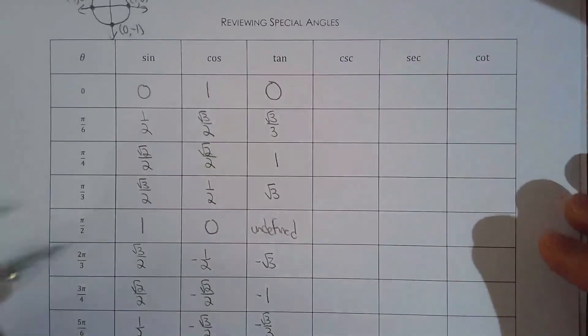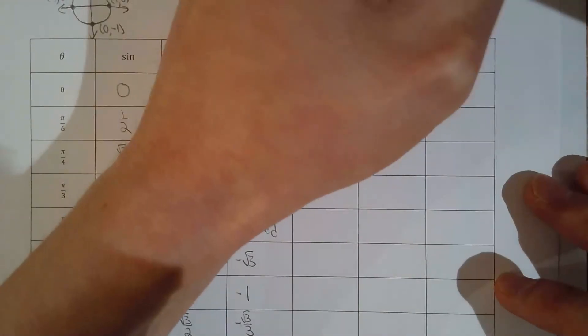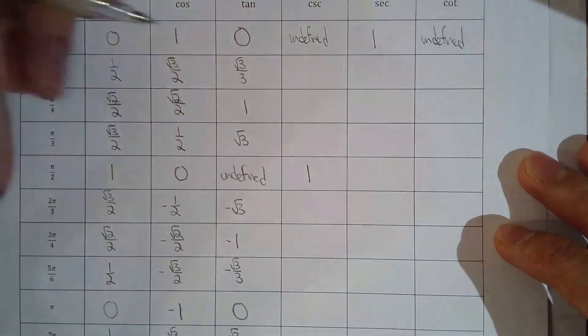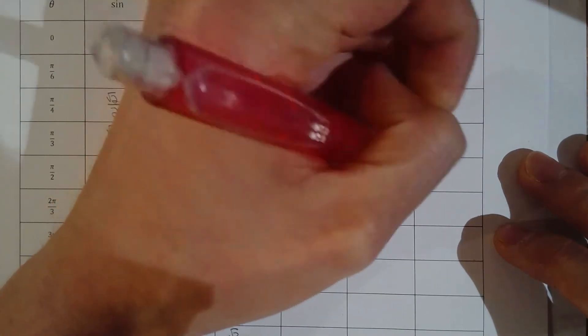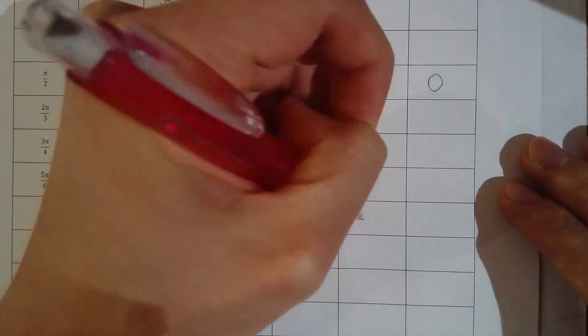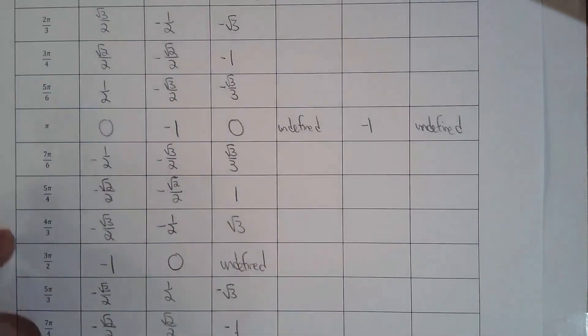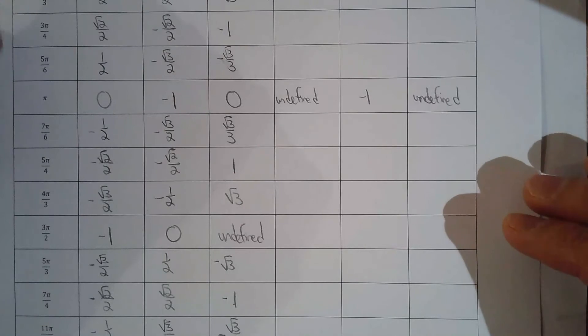Now for the last three columns — the reciprocal functions. We'll do the quadrantal angles first. The values come out as: undefined, undefined, undefined, and 1 (reciprocal of 1 is still 1). Then undefined, 1, undefined, and 0. For 3π/2: undefined, negative 1, and undefined. Knowing when cosecant, secant, and cotangent are undefined will be very helpful when we work with trig functions in the next unit.